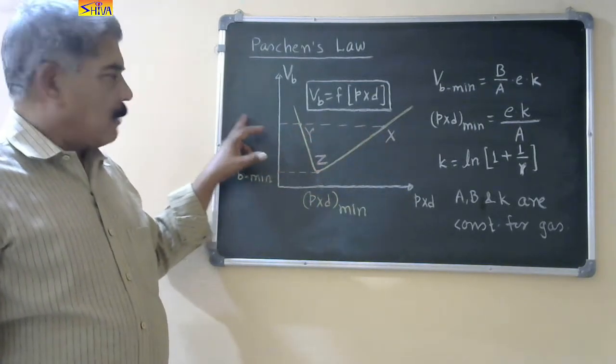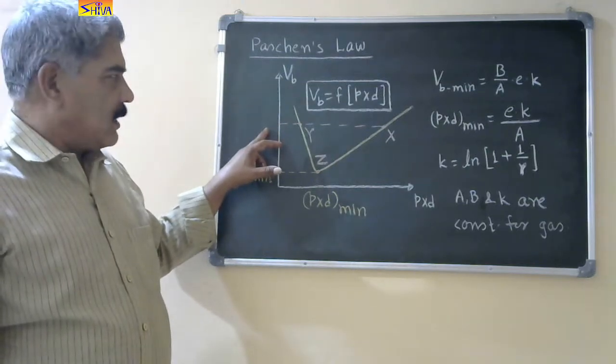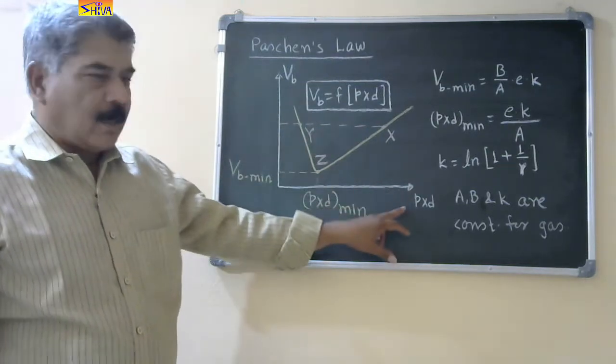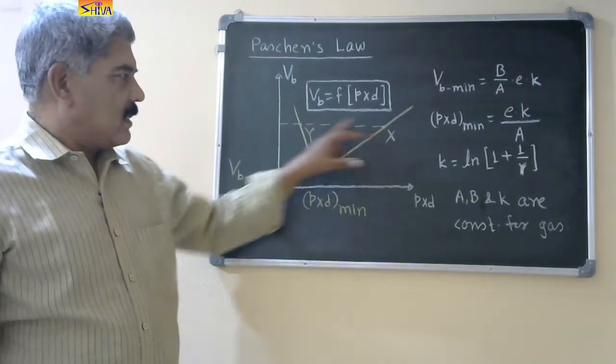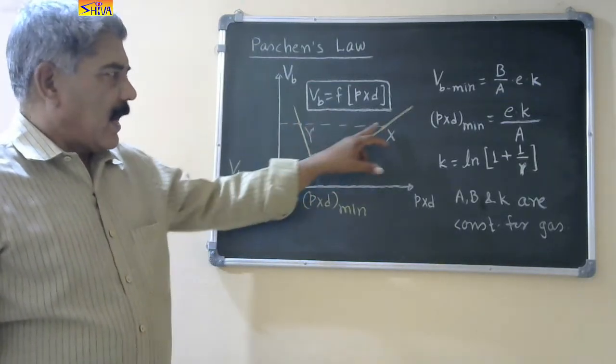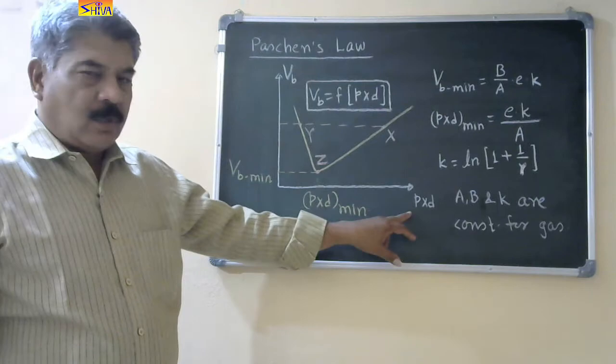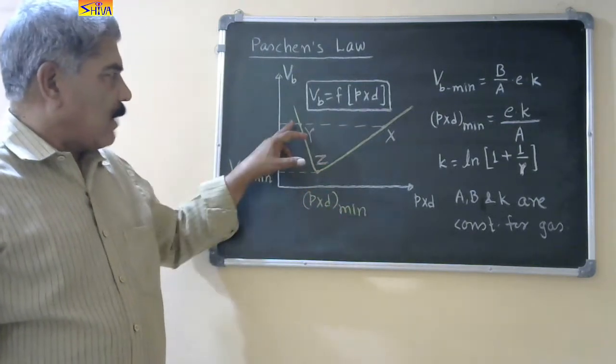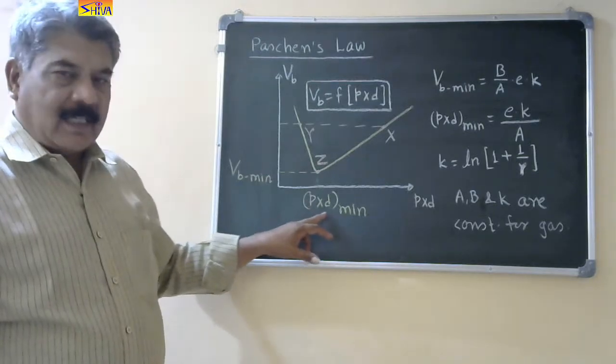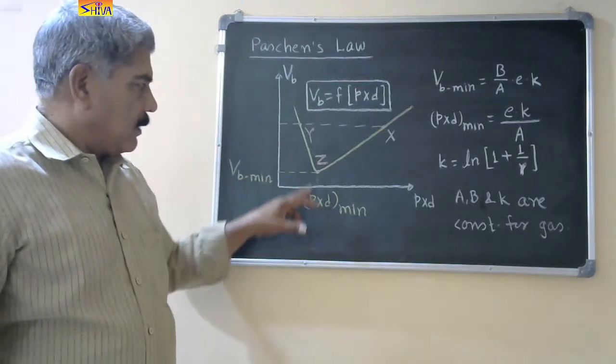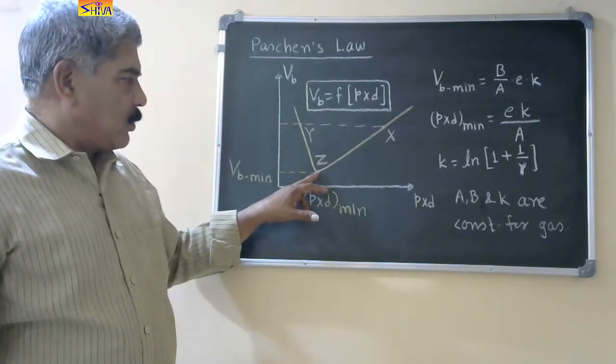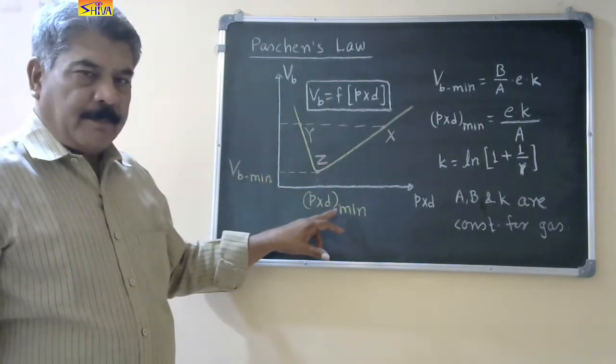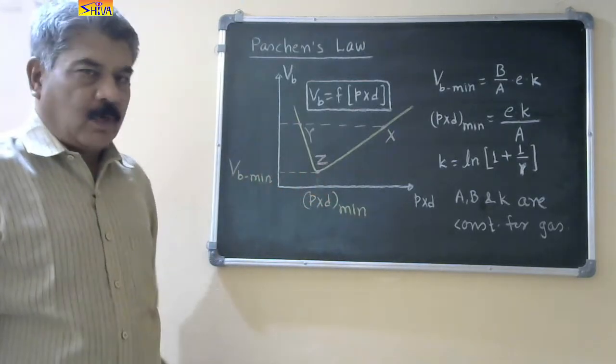For a particular value of breakdown voltage, there will be two different values of p into d, one at x, one at y. At x, this p into d will be higher than p into d minimum, whereas at y, p into d will be less than p into d minimum. And third point is z, this shows minimum value of p into d and minimum value of the breakdown voltage.